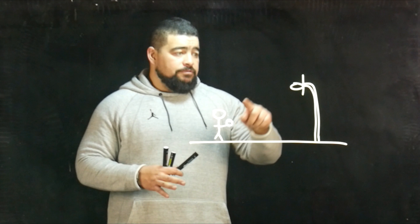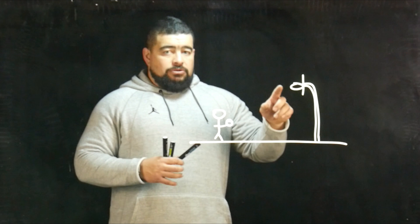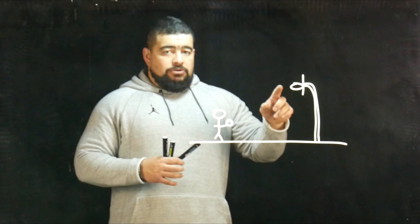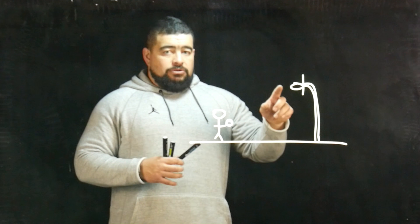If our friend here shooting his basketball wanted to get the ball up and into the hoop, he needs to make sure that his angle of release is high enough to get over the front of the rim, but not so high that it goes too high — you don't want it to have too much vertical velocity. You want it to be at such a point where it can go high enough to get over the rim and into the hoop.